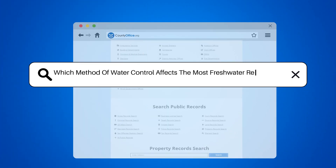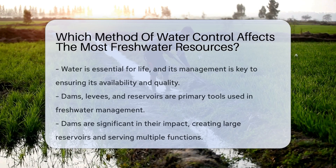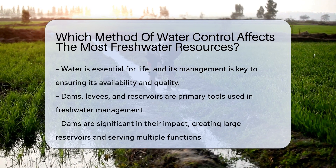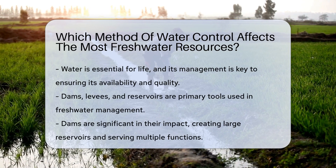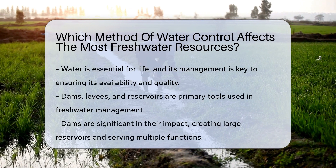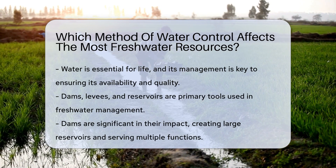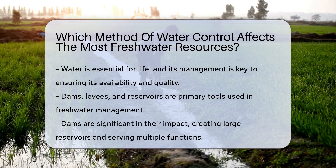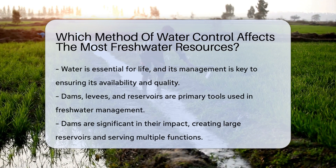Which method of water control affects the most freshwater resources? Water is vital for life, and managing it is a complex affair. When it comes to freshwater, various methods ensure its availability and quality. Dams, levees, and reservoirs are just some tools we use. But which reigns supreme in influencing freshwater resources?